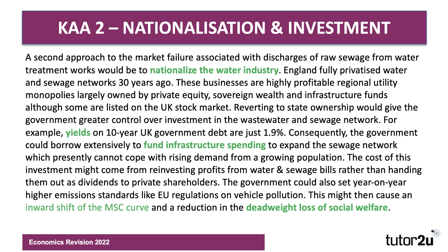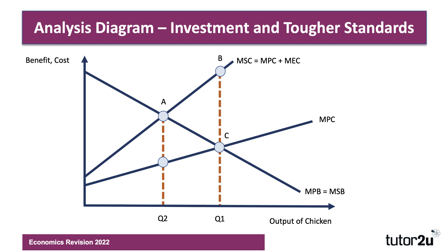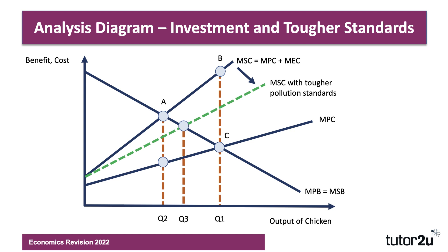With nationalisation, you could also set very high standards — the EU, for example, sets tough standards on emissions from cars, and you could do something similar. If you impose very tough standards, that could cause an inward shift in the marginal social cost curve and a fall in the deadweight welfare loss. In the diagram, with tougher pollution standards there's an inward shift of MSC — as a result the social optimum moves to Q3, not Q2, and the deadweight loss of welfare falls from ABC to DEC.